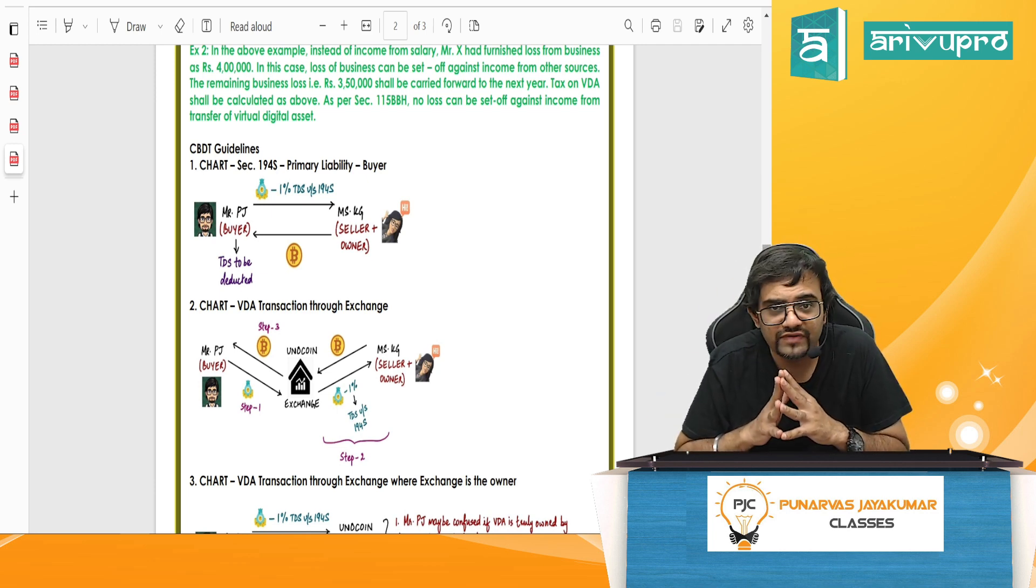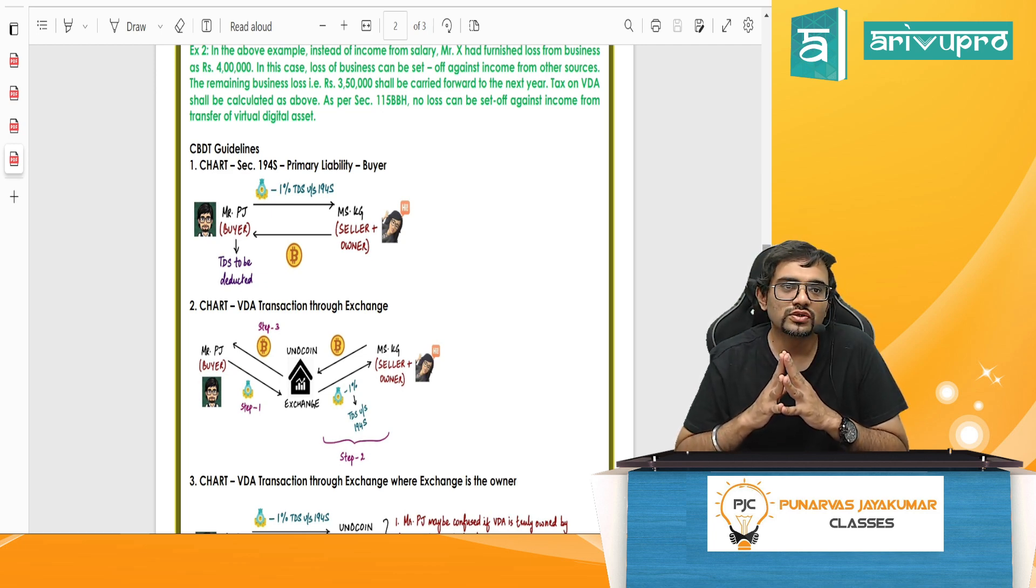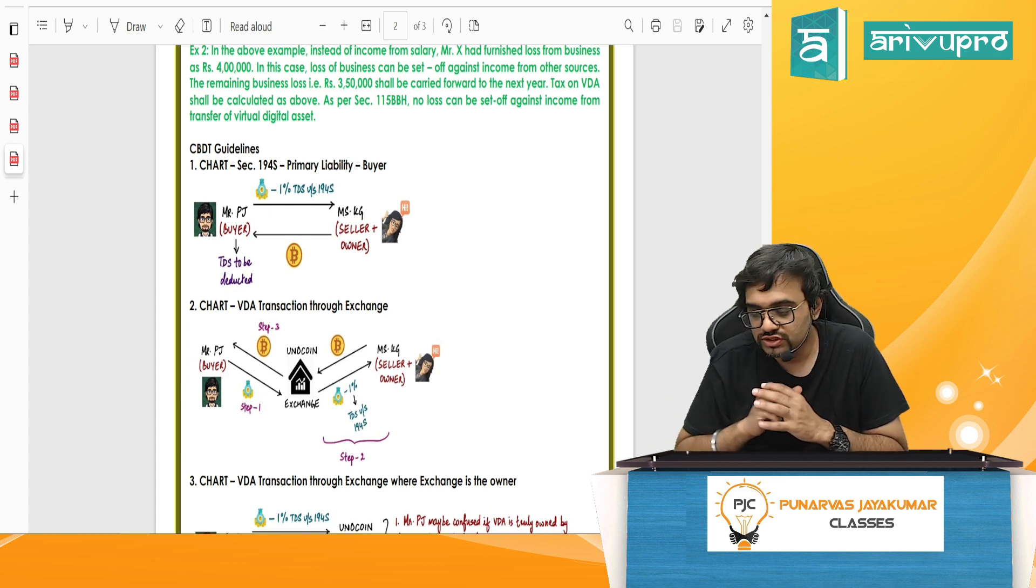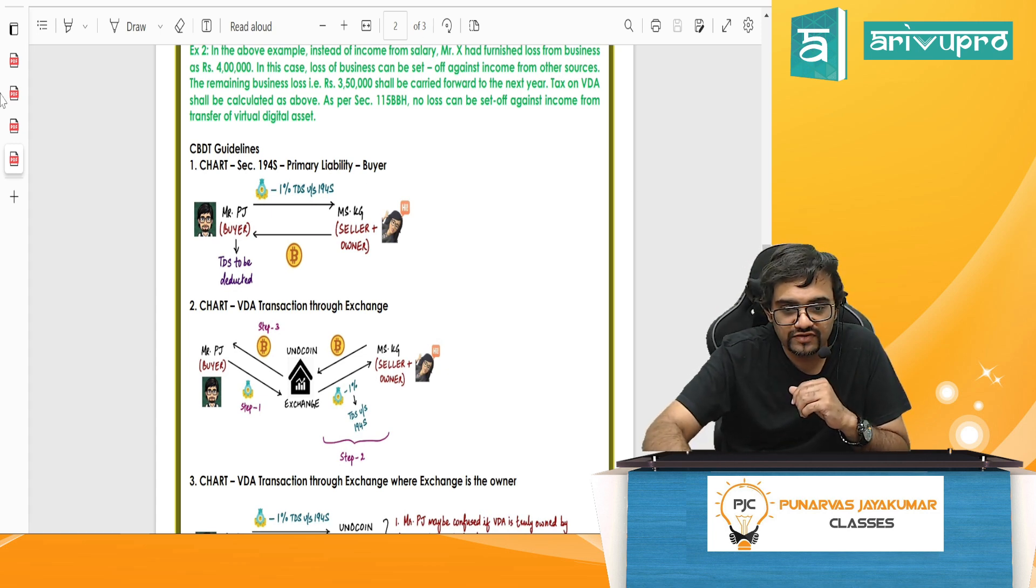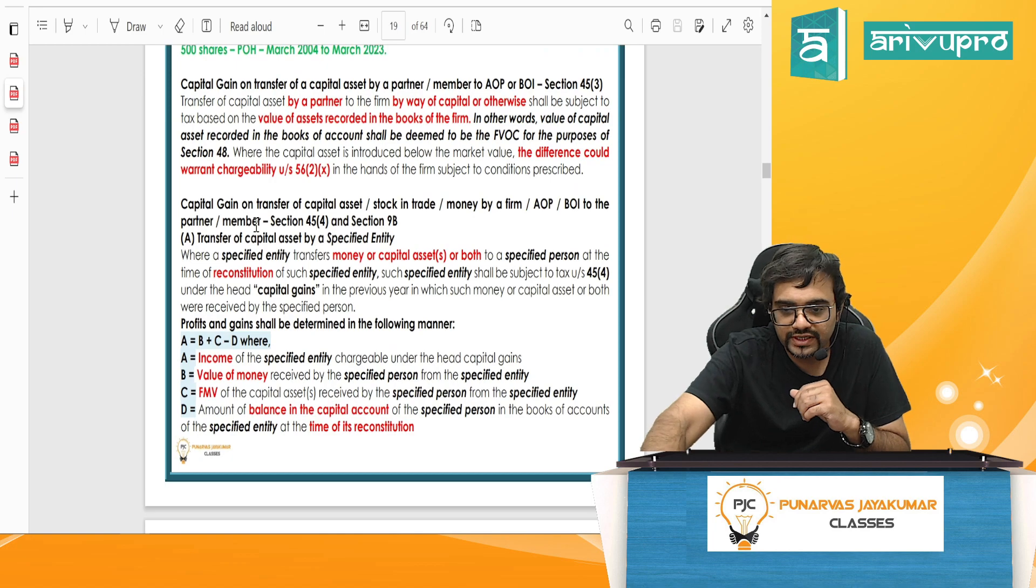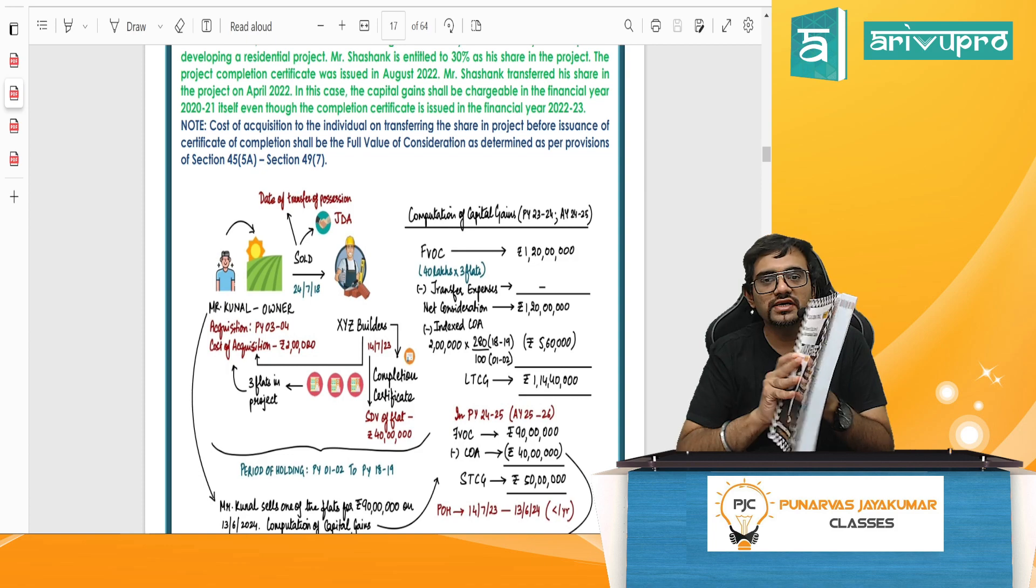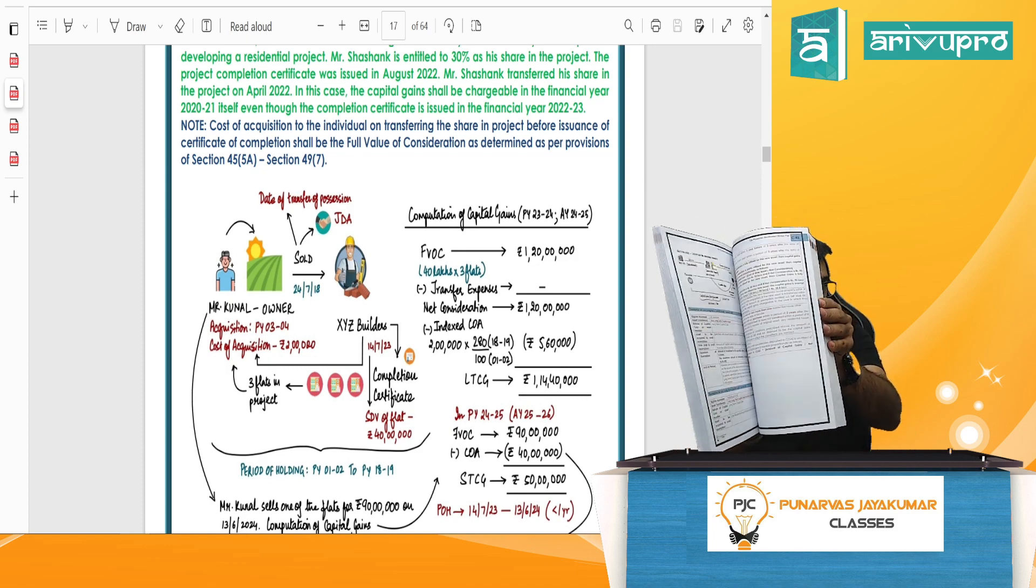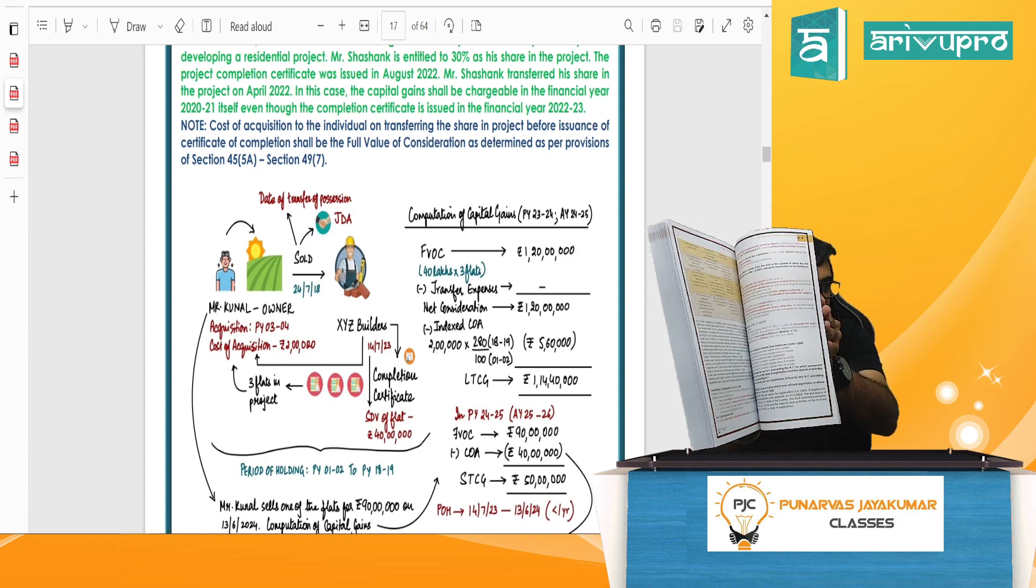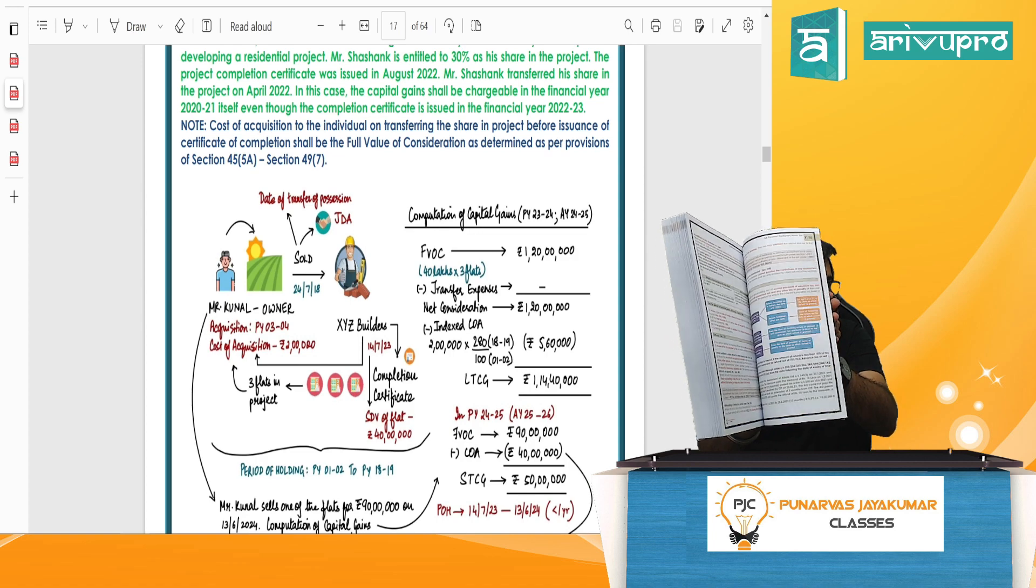So will it confuse you in any way? No. Will it be supplementary and complementary to the classes? 100% yes. So the Bare material that we are going to use is my own material, a colorful material that we have prepared, which you can purchase separately. It is called as the tax verse. Here's the book. It is completely color. As you can see, the first module is fully colored with a lot of charts, a lot of handwritten charts, etc.